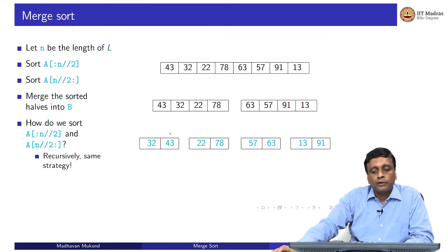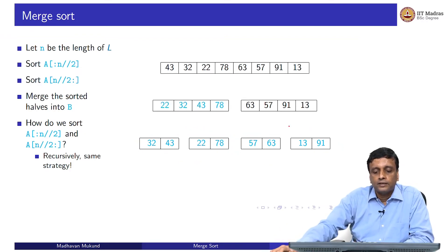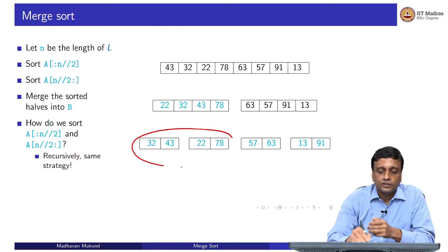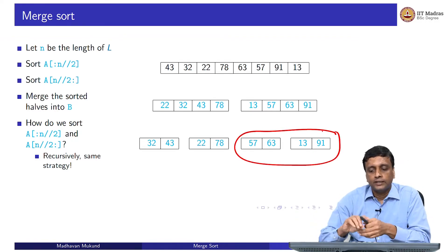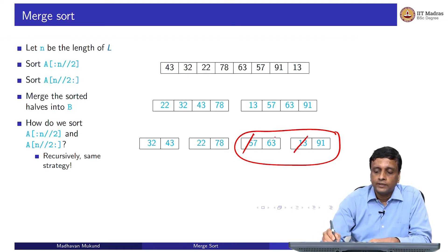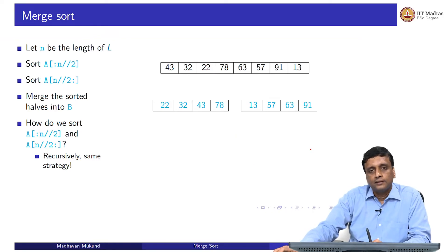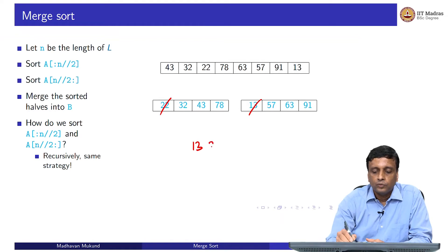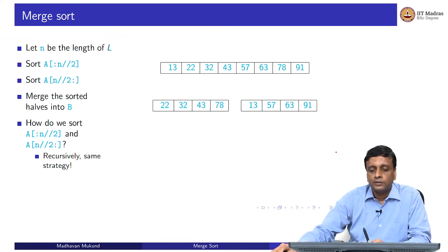Now I have sorted lists of length 2. I combine them into sorted lists of length 4. From the left hand side I get 22, 32, 43, 78. From the right hand side I get 13, 57, 63, 91. I apply the merge function: pull out 13, then 57, then 63, then 91. Now I have two sorted sequences of length 4, and I do a single merge: I want 13, then 22, then 32, then 43, then 57, then 63, then 78, then 91. Applying this merge gives the sorted sequence and I am done. This is how merge sort works.